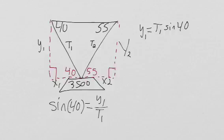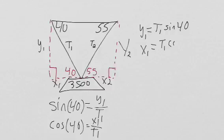And then if we want to find the vertical or the horizontal component, we do cosine 40. And that's equal to the adjacent X1 over the hypotenuse, T1. So we get it equals X1 over T1. So then we get that X1 equals T1 times cosine 40.